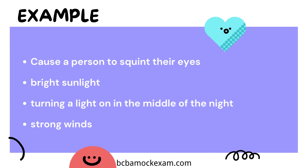Consider the example of turning a light on in the middle of the night. This action of illuminating the room can be seen as a stimulus class that includes various stimuli producing a similar behavioral response. These stimuli could include flipping a light switch, clapping to activate a smart light, or using a mobile app to control the lights. Despite the different stimuli involved, they all share the common effect of producing light and influencing the behavior of illuminating the surroundings.